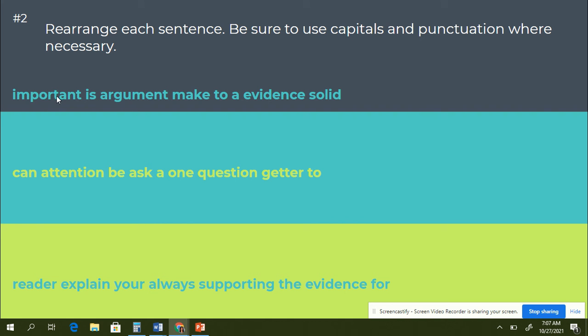So for example, important is argument make to a evidence solid. I have to arrange those words to make a complete sentence that makes sense about argumentative writing. So I could say evidence is important to make a solid argument.